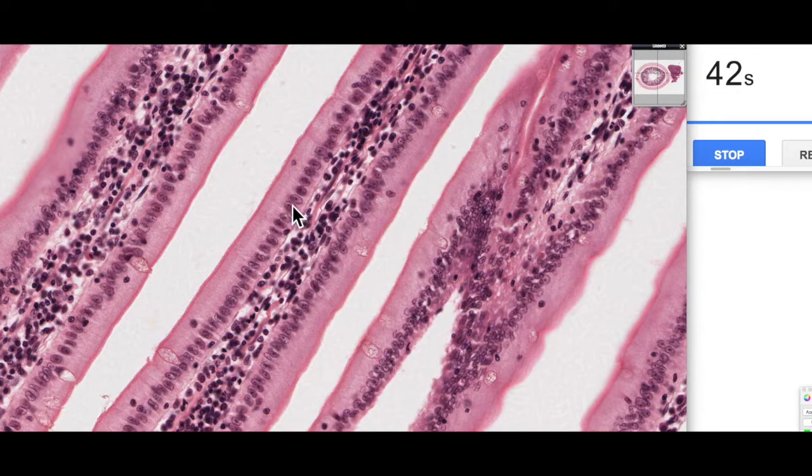You can see here we've got some very dark basophilic nuclei. These are different cell types within the underlying loose connective tissue. We've got our simple columnar epithelium here.